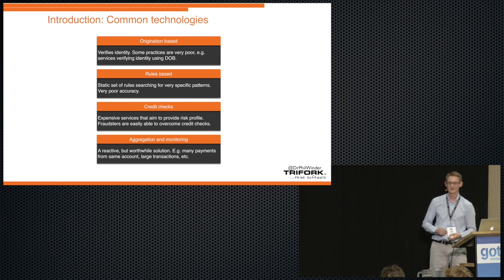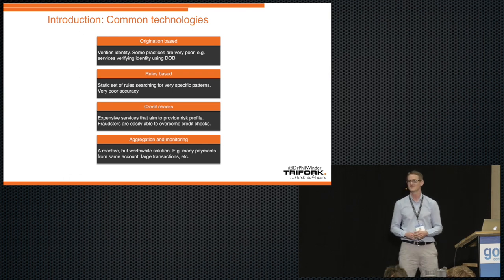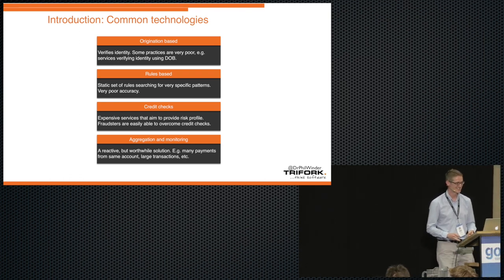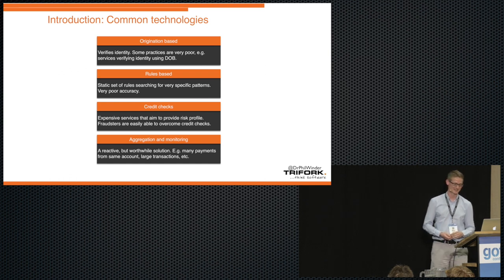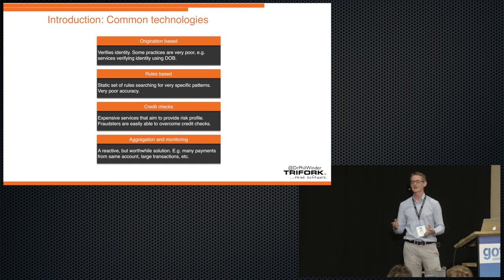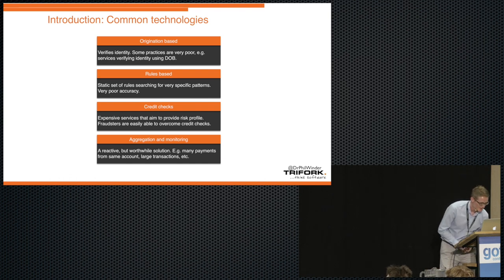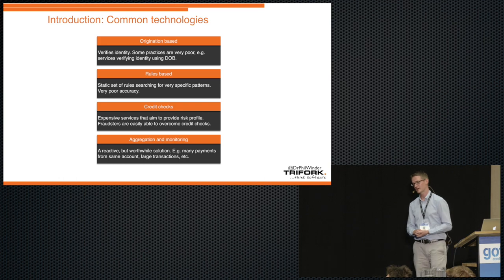Credit checks. So lots of agencies will gladly accept your money to provide you with a number. That's it. And these numbers are supposed to represent the worthiness or the risk that that person provides to your business. And there's certainly a case, there's an argument to use them. How accurate they are is another question. Aggregation and monitoring. So this is more of a reactive type of solution where analysts would be provided with the data and they perform some query or ask a question and try and do something based upon that. For example, you can have some guys that find a pattern between one cash machine that gave out a large amount of money. So the analyst will then say, check it out.